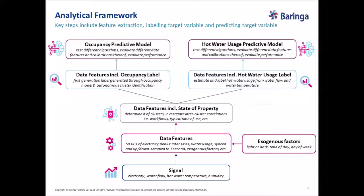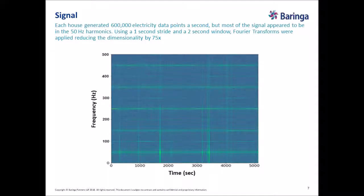A key point is that we weren't given labels for occupancy or hot water usage — it was a semi-supervised problem. For hot water, labelling was relatively easy because we had water flow and water temperature, so we could infer when the boiler had kicked on. For occupancy it was trickier — we had to guess when people were home using other sensors. Humidity, for example, is a clear indicator: if it goes up, someone's home. We had a few people manually label a property, compared their opinions — which were actually quite consistent — and built a small app for that labelling exercise.